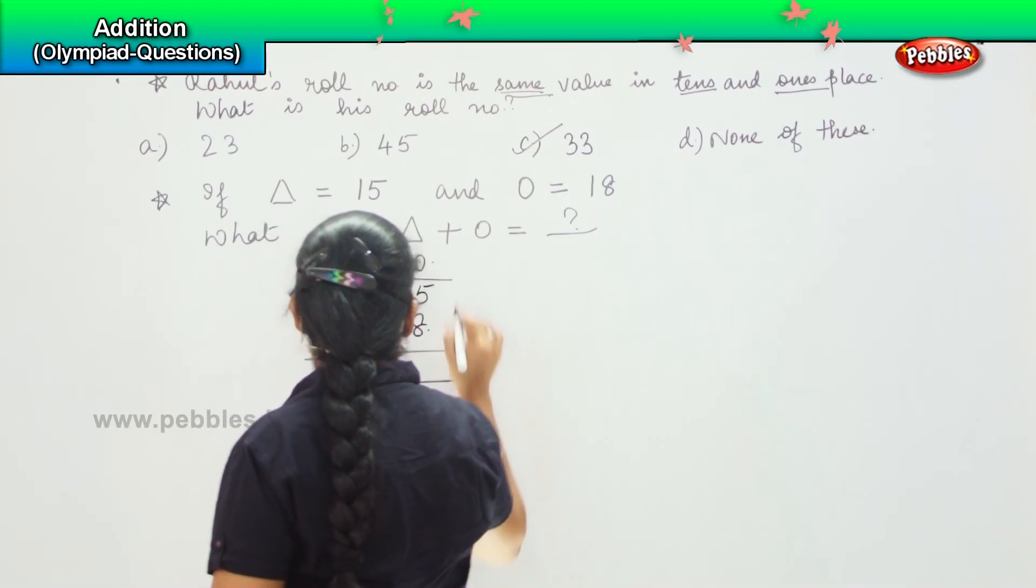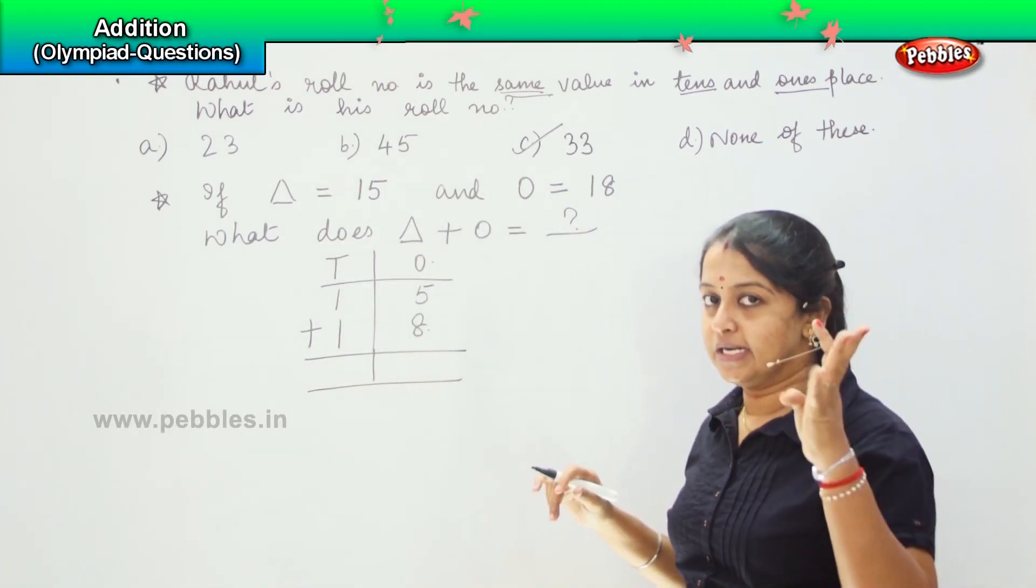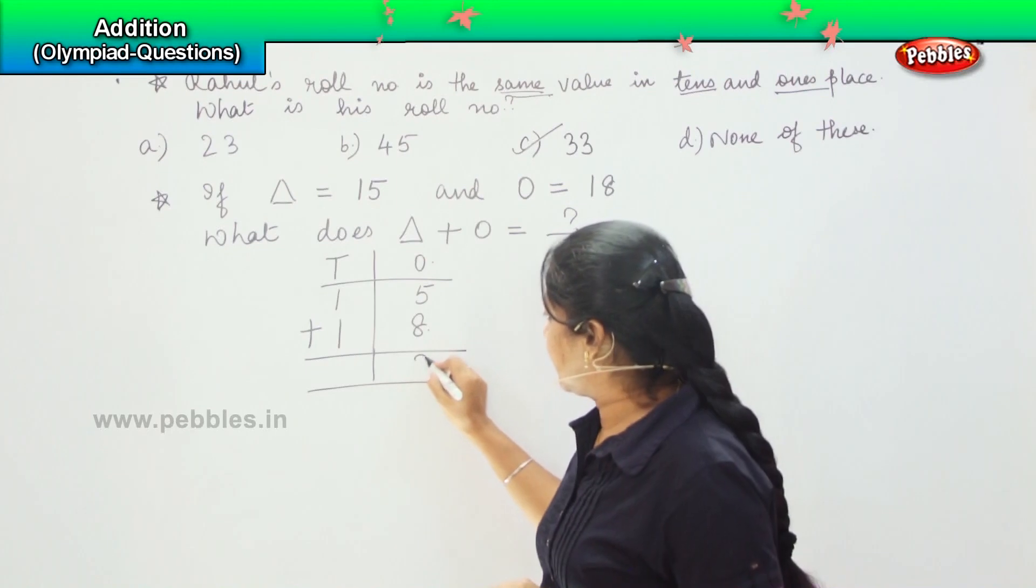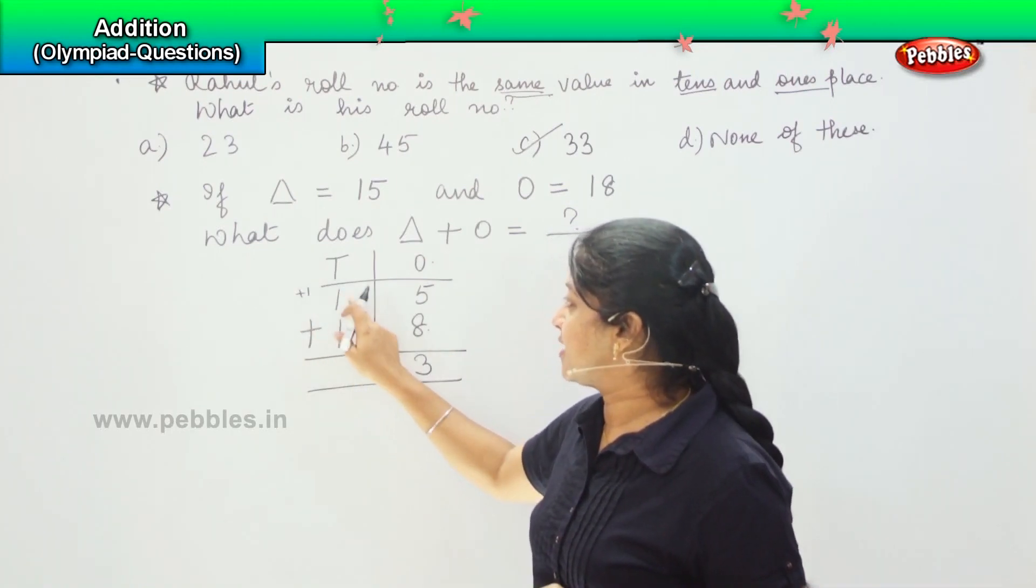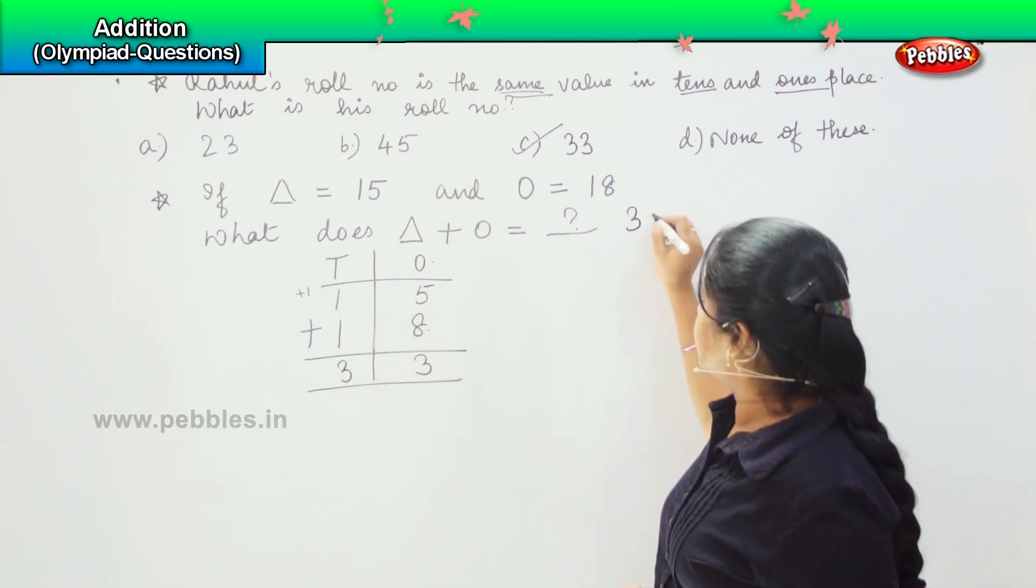When you add the total of both, 5 plus 8 equals 13. So 1 is getting carried forward here. 1 plus 1 equals 2, 2 plus 1 equals 3. So my answer is 33.